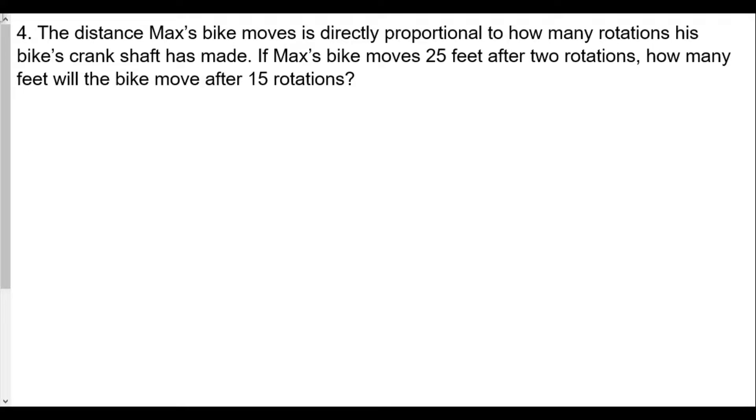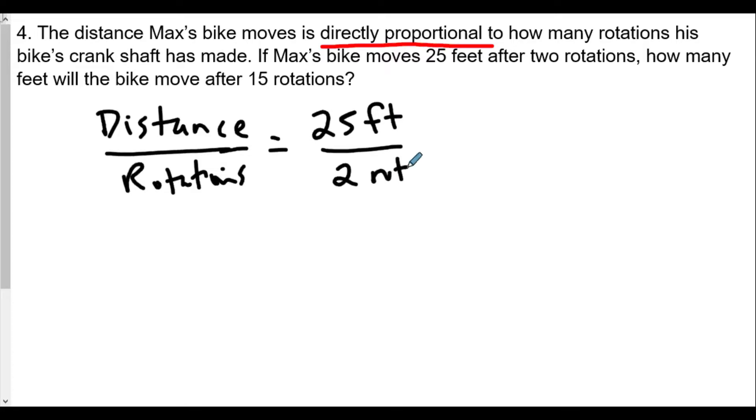Question number four. The distance Max's bike moves is directly proportional to how many rotations his bike's crankshaft has made. If Max's bike moves 25 feet after two rotations, how many feet will the bike move after 15 rotations? Well, we have here in this case, it says the bike varies directly, the distance varies directly with the number of rotations. So we'll write down in this case, distance and rotations. Please remember, ladies and gentlemen, when we talk about the idea of directly proportional, we're saying a proportion here. They tell us that Max's bike moves 25 feet for every two rotations. How many feet, I'll call it n feet, will we get after 15 rotations?